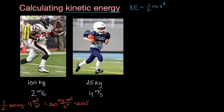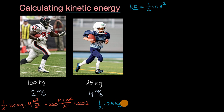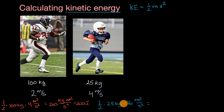Now let's do the same thing for the running back with less mass. Kinetic energy here is going to be one half times the mass, 25 kilograms, times the square of the speed — so that's 16 meters squared per second squared. That gives us one half times 16 is 8, times 25 is 200. We get the exact same units, so we can go straight to 200 joules.